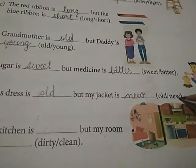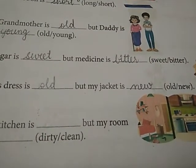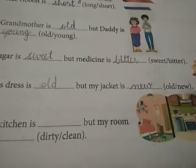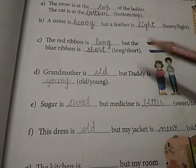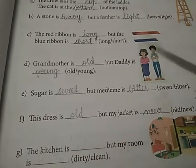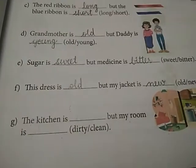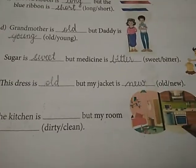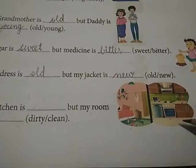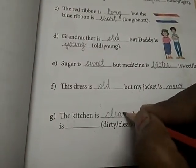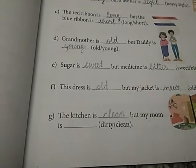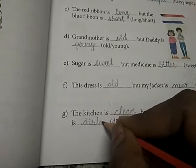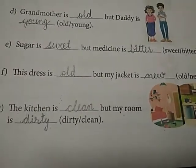Beta, we are choosing the word from the bracket. Brackets se fill kar rahe hain hum ye words. Spelling is written here. You can write. If you have any problem with visibility of the answer, you can write from the brackets. Is it clear? Next. The kitchen is — see, it is kitchen. Kitchen dirty hai ya clean hai? Kitchen is clean. But my room is dirty. Room mein saman phela hua hai, idhar udhar padha hai, to dirty.